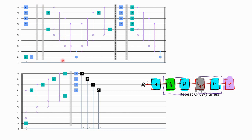Then this box here is the U_f. After U_f you have a Hadamard gate — in this small box the input bit is applied to the Hadamard gate. And after the Hadamard gate what we have is mean inversion — this part from this box until this box is the mean inversion.